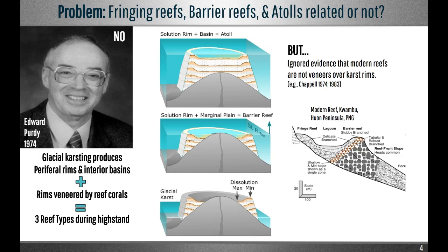By the 1970s, glacial cycles had been confirmed by dating of reef terraces on Barbados, and it was widely accepted that they generated multiple episodes of sea level rise and fall. Using this consensus, Edward Purdy suggested in 1974 that it was the karstic dissolution of carbonate terrains during glacial low stands that caused barrier reefs and atolls to develop. He argued that long periods of glacial karsting produced solution rims, which when flooded by post-glacial sea level rise provided topographic residuals over which reefs could grow. Purdy was also claiming that reef types don't form an evolutionary sequence, just as Daly had done.